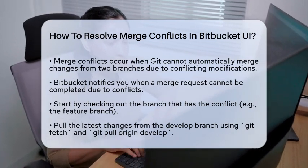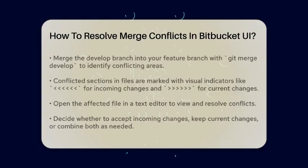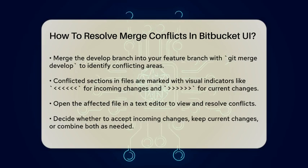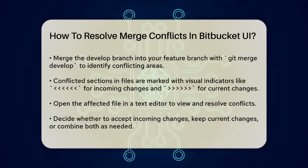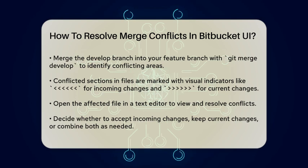Go to your local repository and check out the branch that has the conflict. For example, if you're trying to merge a feature branch into the develop branch, you would check out the feature branch. Pull the latest changes from the develop branch to ensure your local branch is up to date. You can do this by running git fetch and then git pull origin develop.